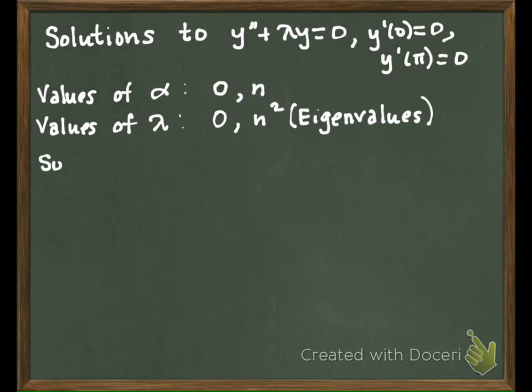And then our solutions. When we had lambda equals zero, we simplified to y equals 1. It was y equals an arbitrary constant, but you just scale it down to 1. Our other one was y equals cosine of n x. And what did we call those solutions? Those were our eigenfunctions.